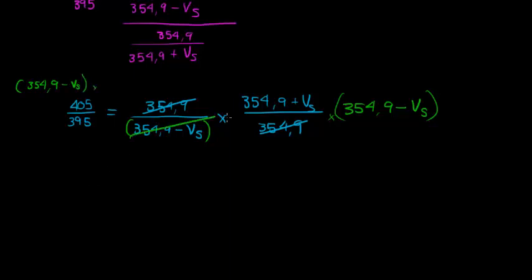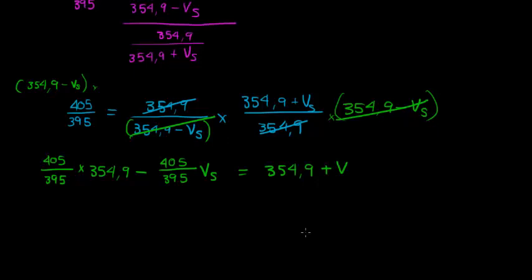So we've got 354.9 divided by 354.9 minus Vs times 354.9 plus Vs over 354.9, and that's when I see this and that can cancel. And in order to continue to solve this equation, I need to solve for Vs. So what I'm going to do is, since I have this in the denominator, I'm going to multiply 354.9 minus Vs on both sides. 354.9 minus velocity of the source is multiplied on both sides.